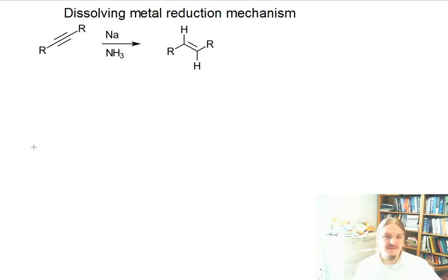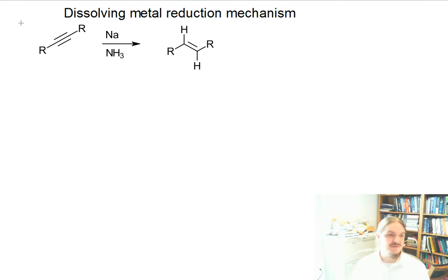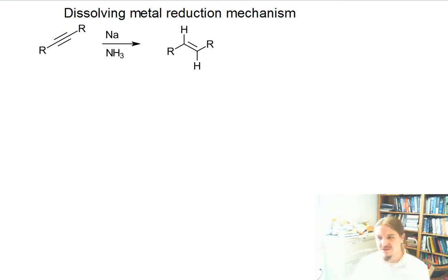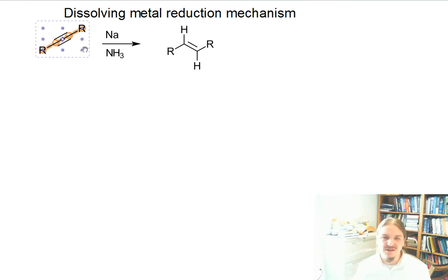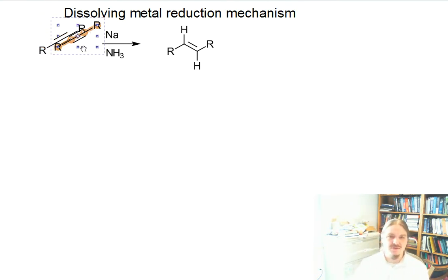Now let's talk about the mechanism of the dissolving metal reduction. This mechanism is going to look very different from others because it involves some single electron transfer steps — some radical kinds of things. Radicals are species that have unpaired electrons. We're going to devote a whole series of videos later to the chemistry of radicals.